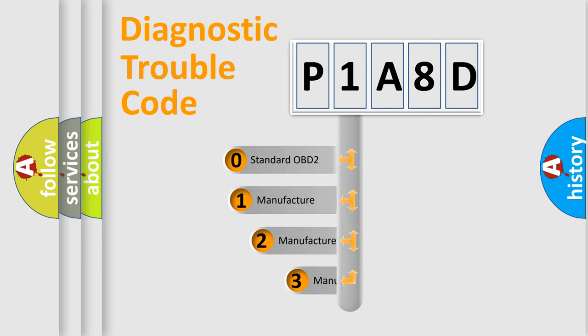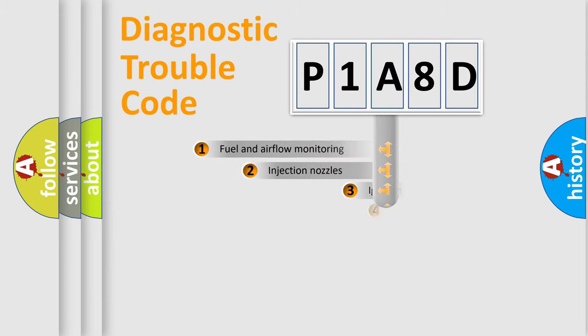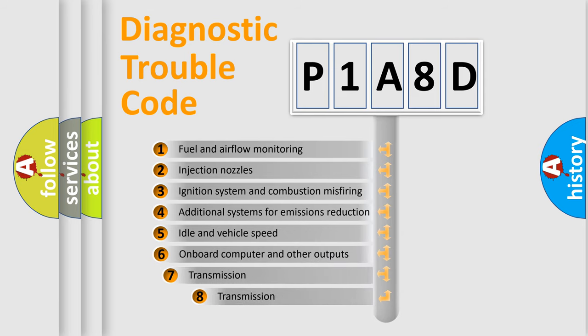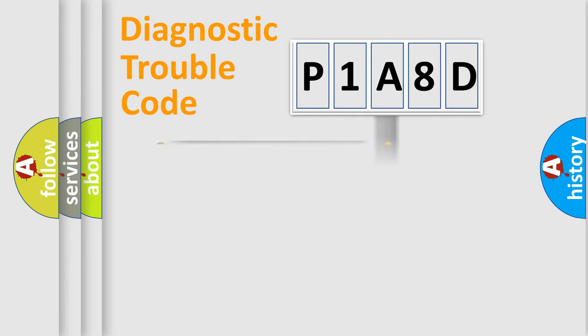If the second character is expressed as zero, it is a standardized error. In the case of numbers 1, 2, 3, it is a more specific expression of the car-specific error. The third character specifies a subset of errors. The distribution shown is valid only for the standardized DTC code.